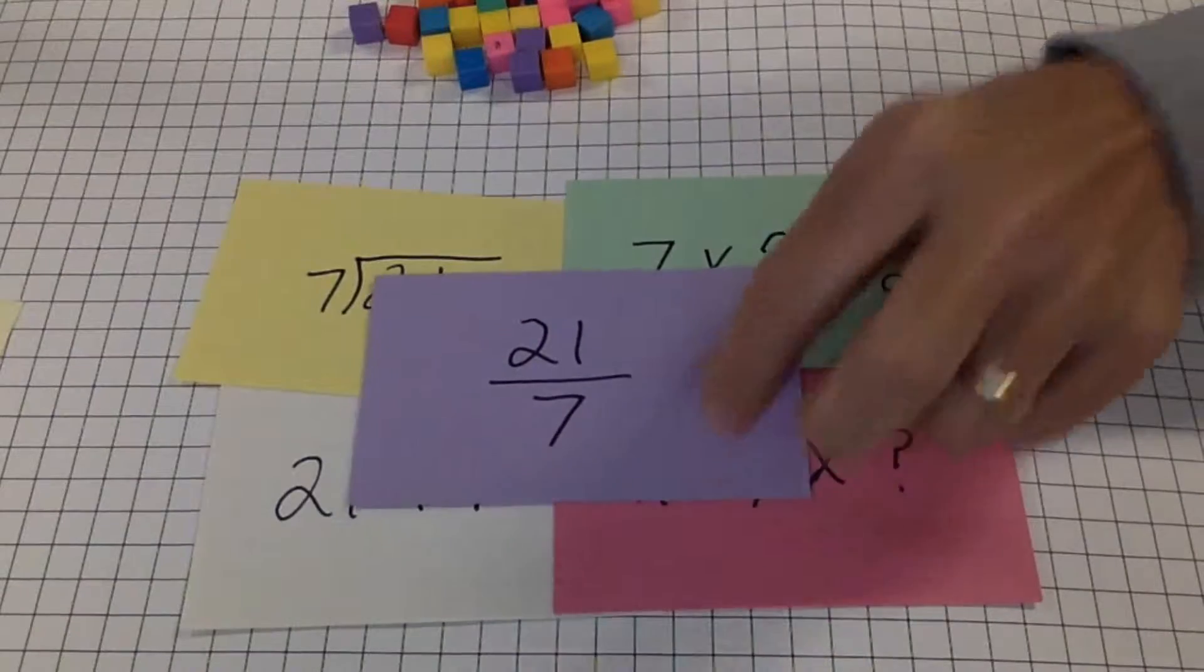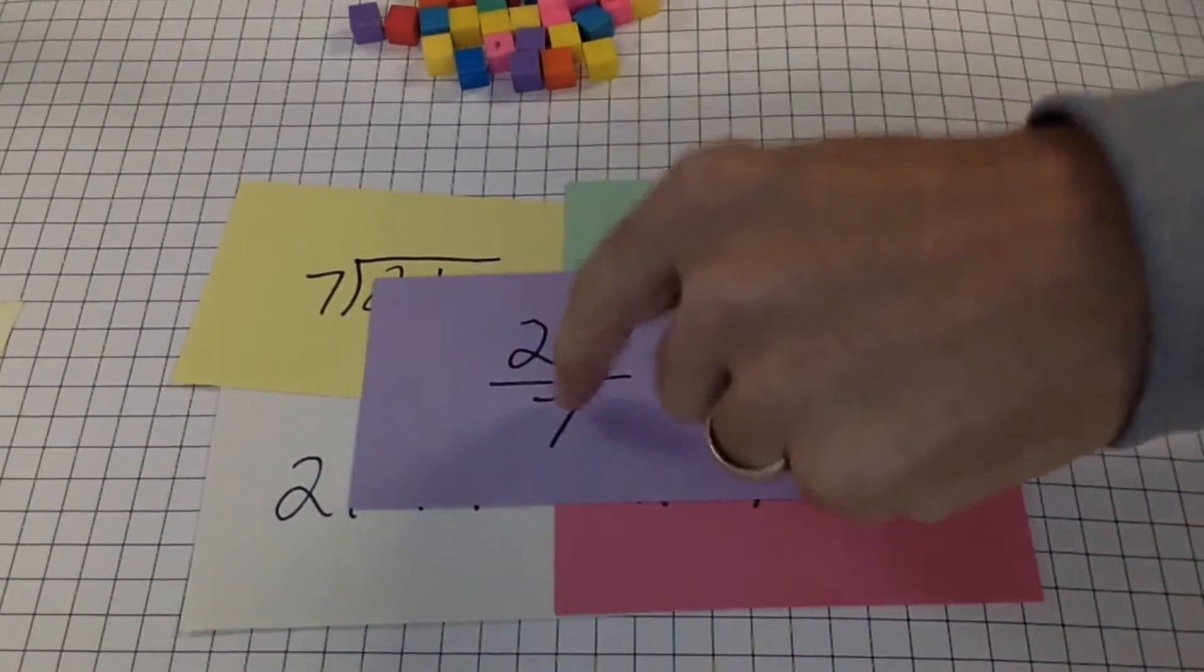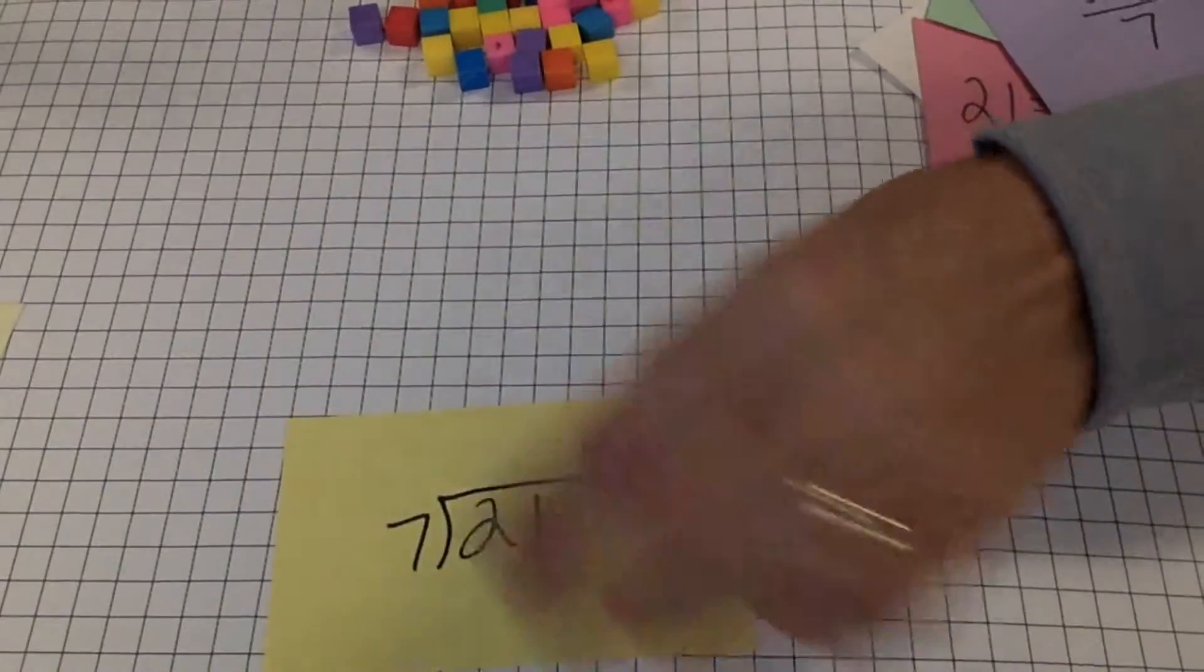And later on in your life, you'll be looking at it as a fraction. A fraction is a dividing problem, 21 divided by 7. We're going to stick with this one.